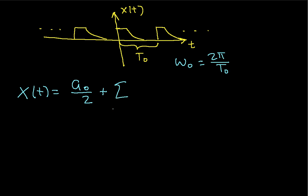Plus the summation from k equals 1 to infinity of a sub k cosine omega 0 t plus b sub k sine omega 0 t. And a sub k and b sub k are the trigonometric Fourier series coefficients.